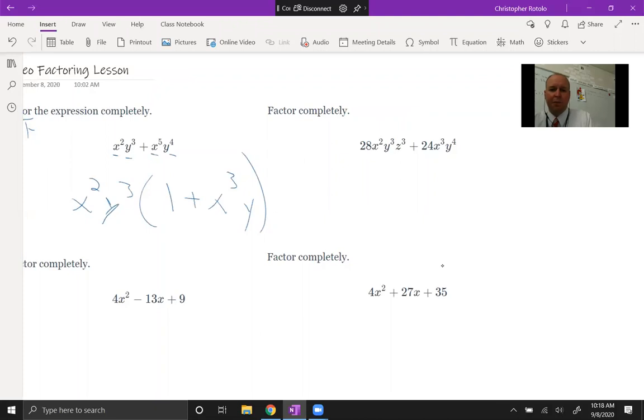And the second one, we're still looking at GCF, so we're going to add in the numerical part, and they're both divisible by four. x, the lowest number is two, y, the lowest number is three, and I don't have a z on the second half, so we've got to keep that. So 28 divided by four is seven, x squared x squared, so it's gone, y cubed y cubed,